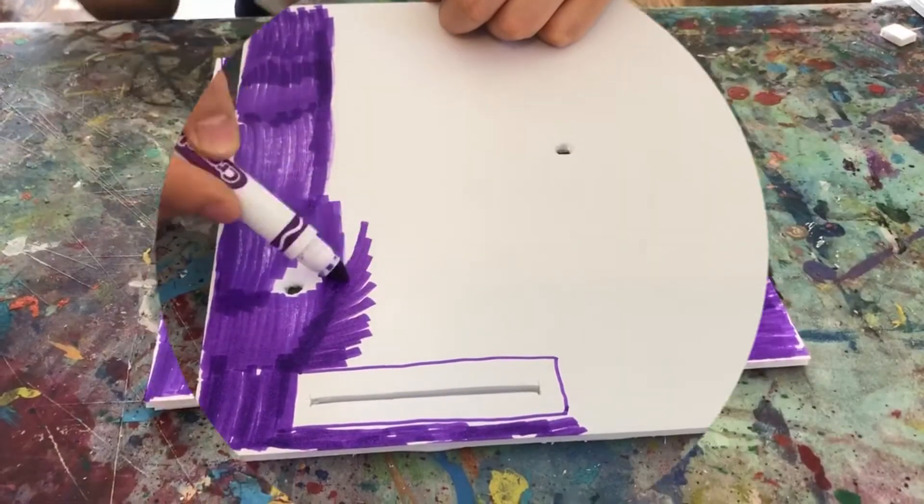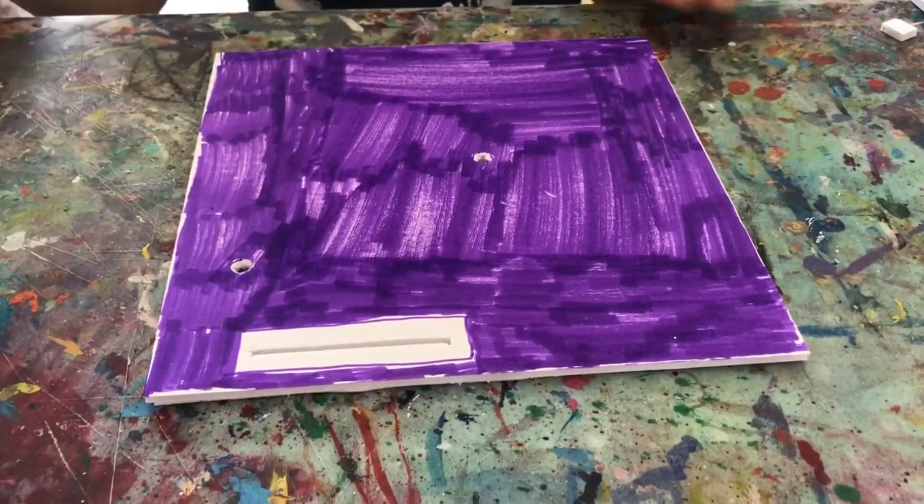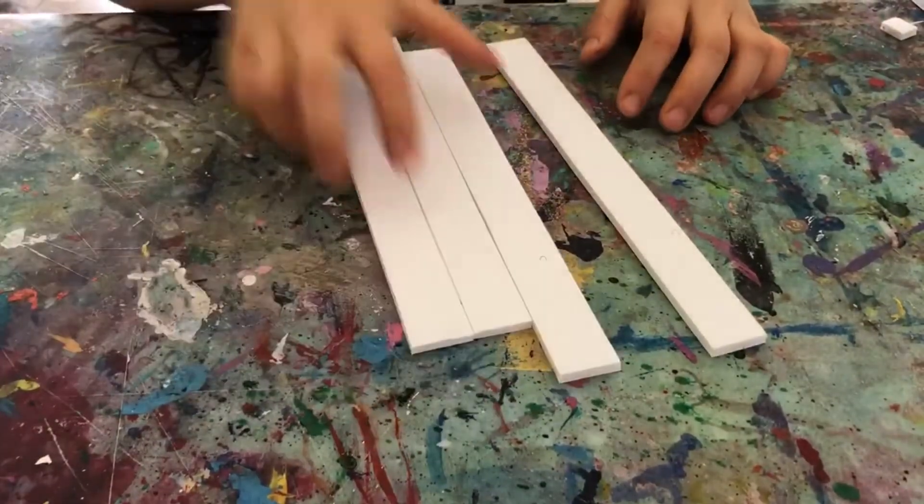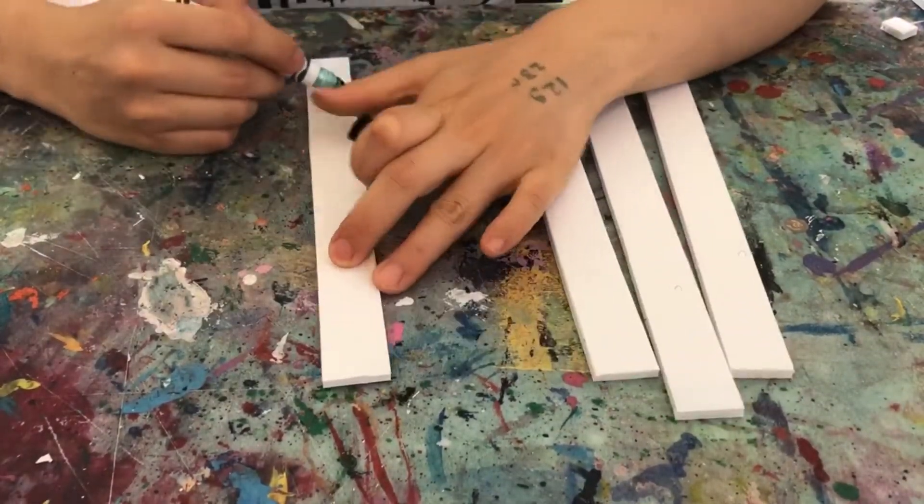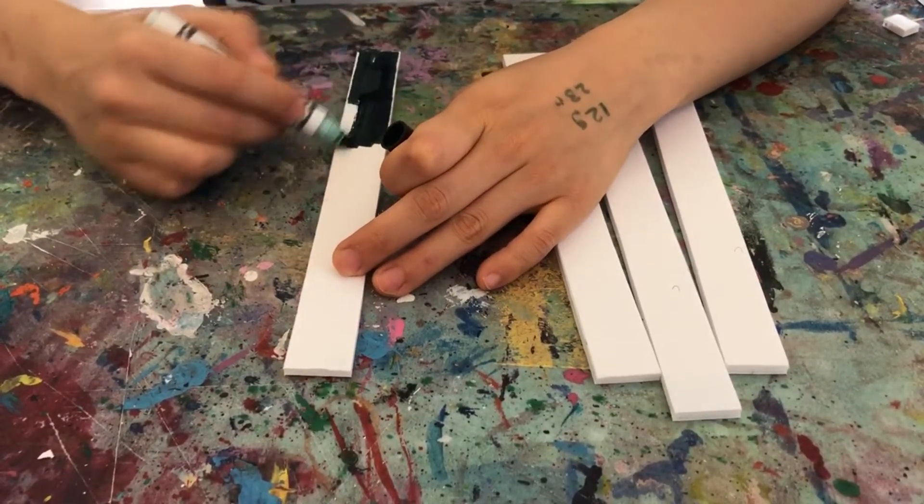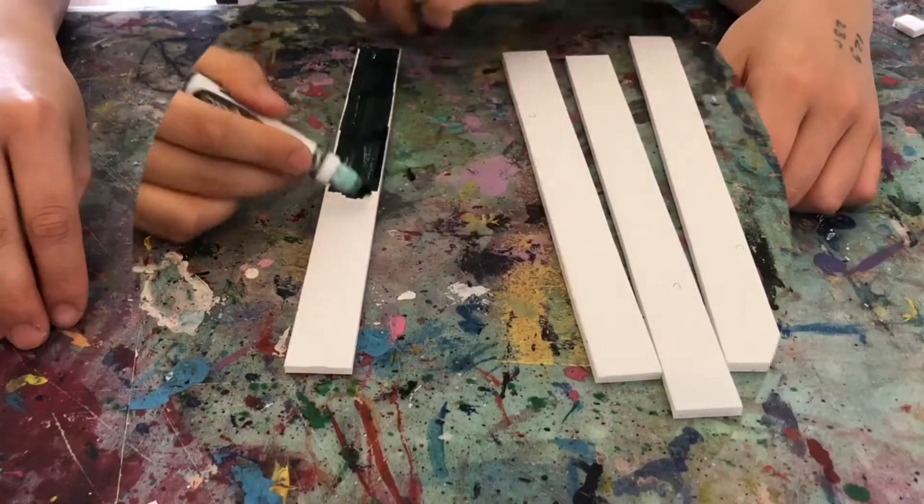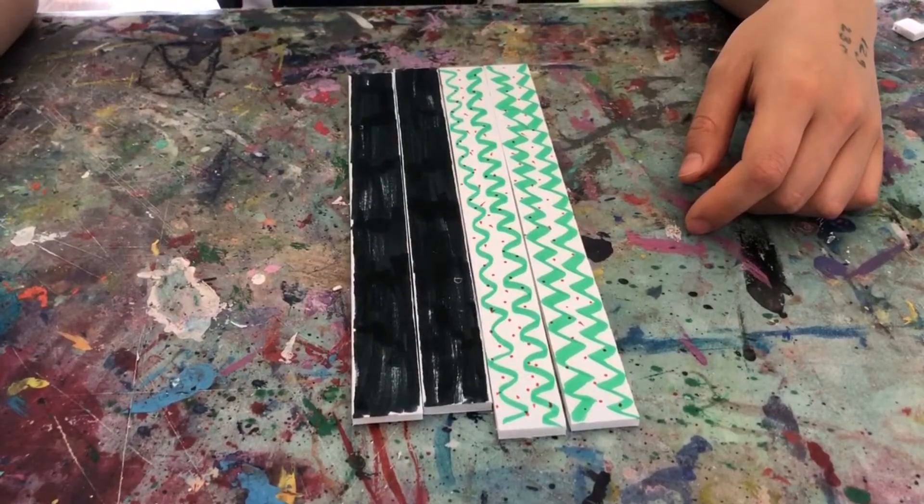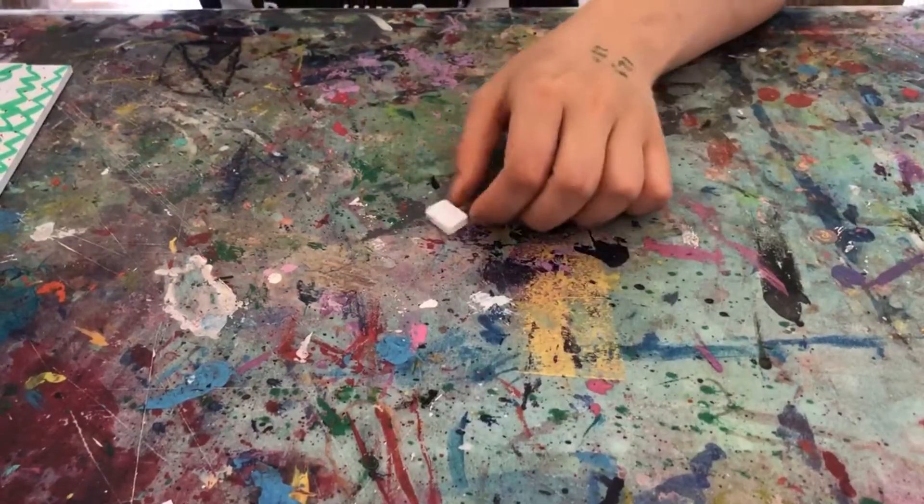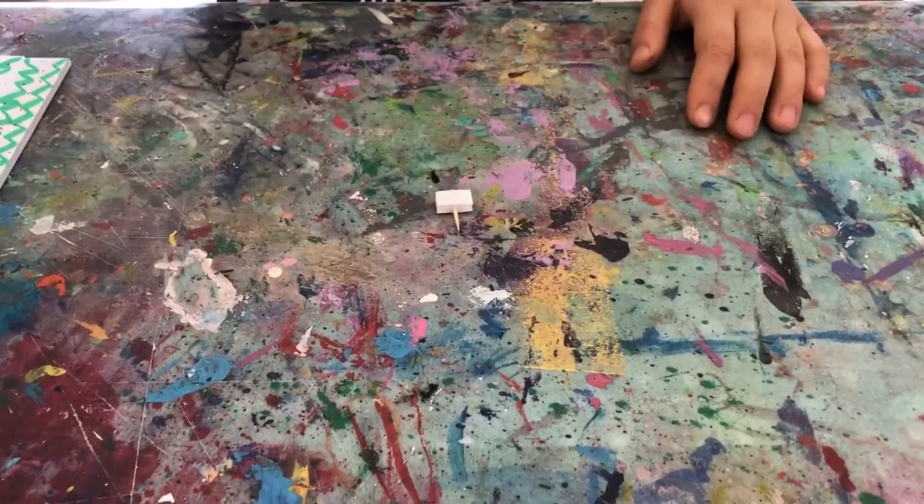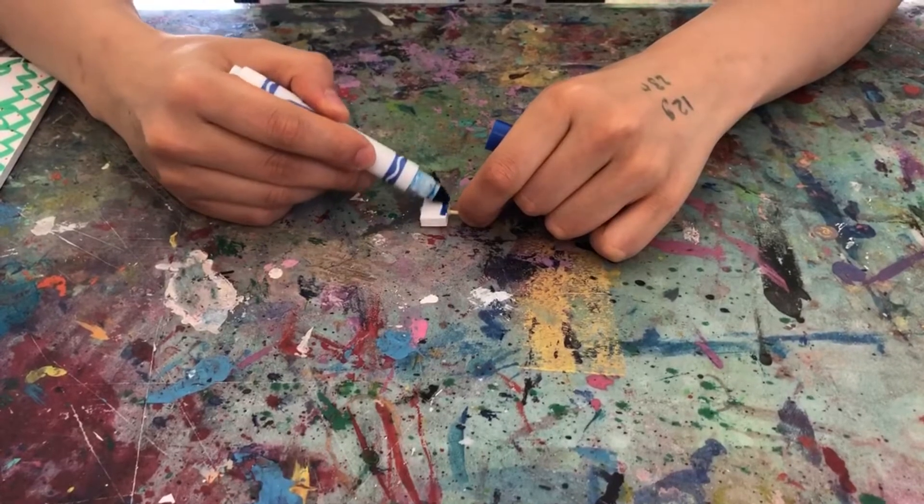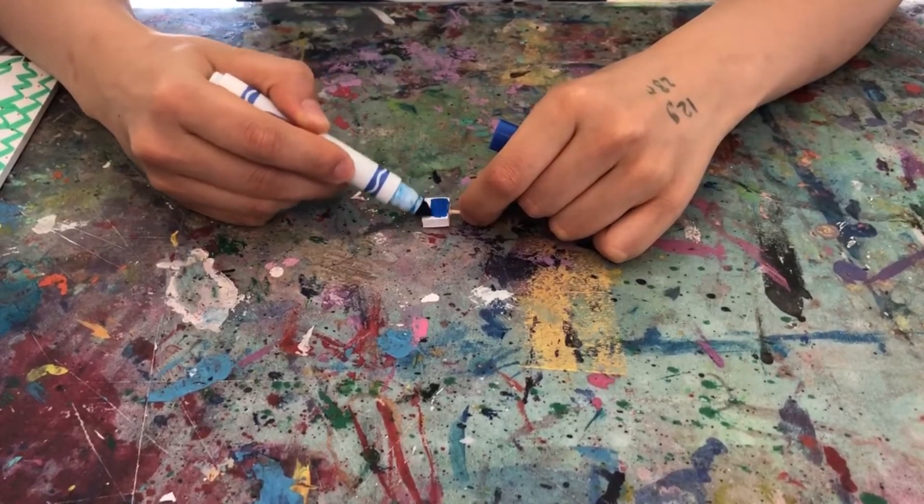Once you're done, you're gonna color and decorate your C and D pieces. Again, you can color it any color you like and you can get super creative with your designs, patterns, and other fun stuff. Then take your little F foam piece and color it as well. This is gonna be your volume control button.